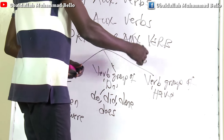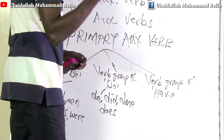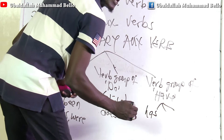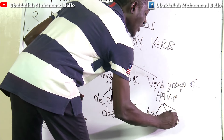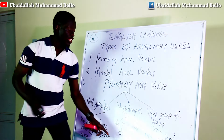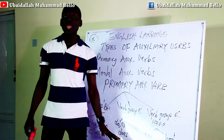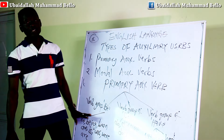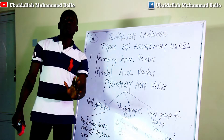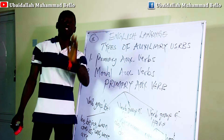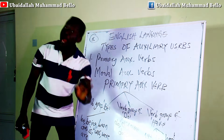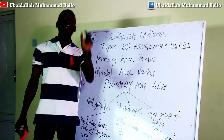The last group is the verb group of HAVE, and there are only three items: HAS, HAVE itself, and HAD. Now you know where each item belongs based on how they are classified as primary auxiliary verbs.